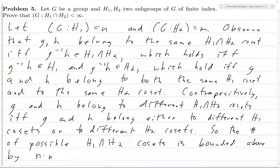So n times m, which is finite. Hence, the index of H1 intersect H2 in G is less than or equal to n times m, which is finite. And so there we go, that's all there is to this proof.